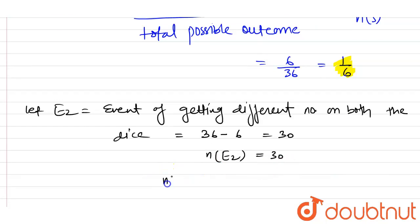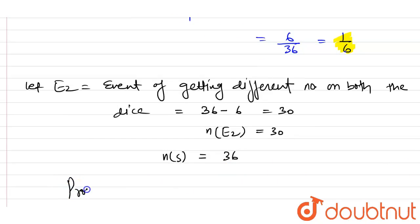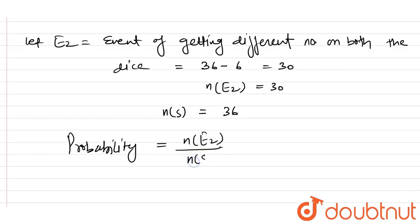Here also our n(S), which is total possible outcome is 36. So here, probability by using our formula equals n(E2) divided by n(S). So this equals 30 by 36. Now, cancel each term by 6, so 6 times 5 is 30, 6 times 6 is 36. So probability of getting different numbers on both dice is 5 by 6.